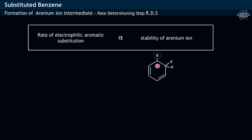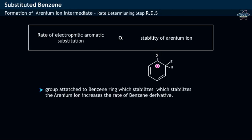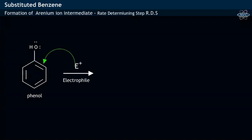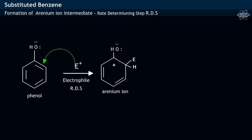Any group attached to the benzene ring which stabilizes the arinium ion increases the rate of the benzene derivative towards electrophilic aromatic substitution. When phenol is attacked by an electrophile E+, it results in the formation of an arinium ion, which is the rate-determining step.